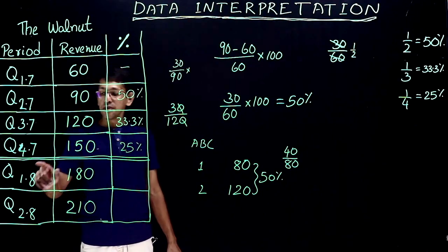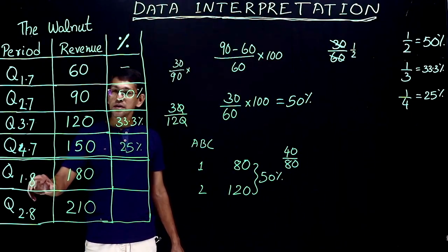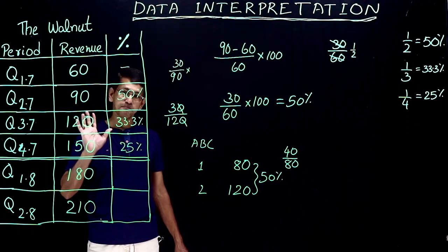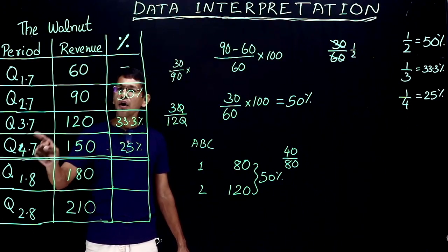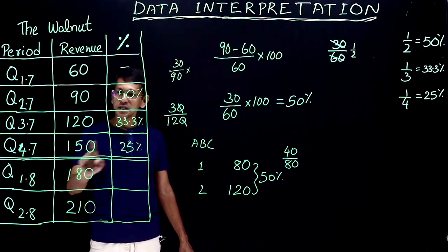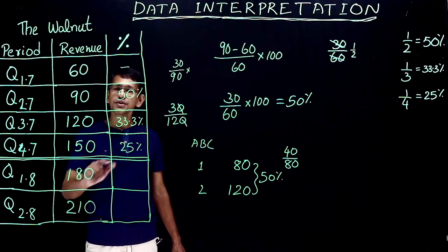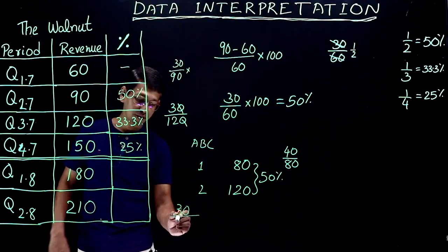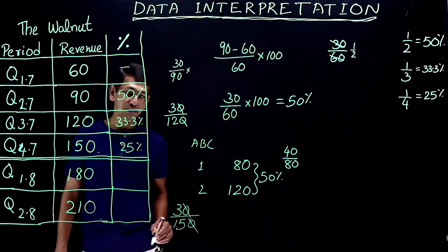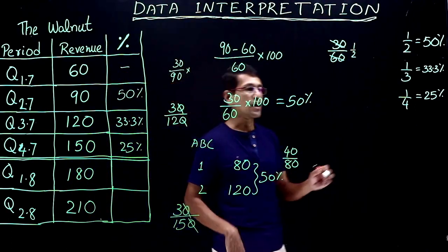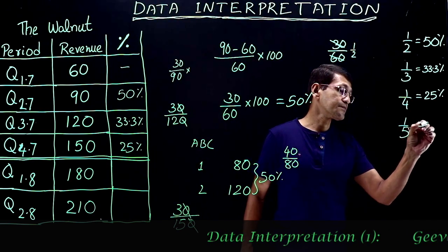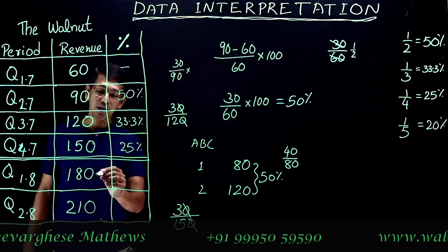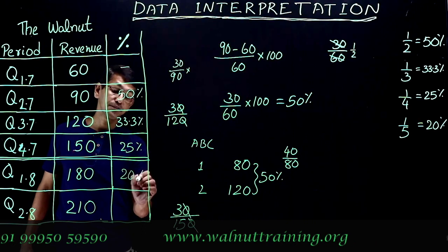Now quarter 4 2017 to quarter 1 2018: 150 became 180. These are continuous periods — the fourth quarter of 2017 is followed by the first quarter of 2018. The increase is 30, and the base year is 150. So 30 by 150 equals 3 by 15, which is 1/5. 1/5 of 100 is 20 percentage. So the increase from 150 to 180 is 20 percentage.